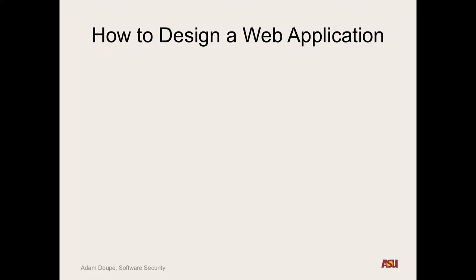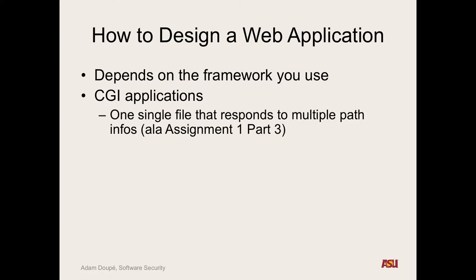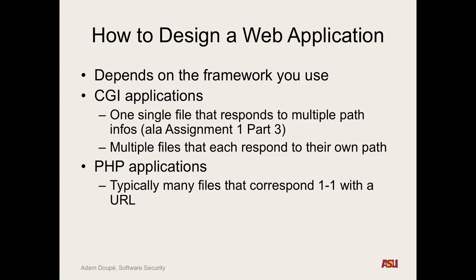We've looked at designing web code, designing a web application — we've looked briefly at PHP and JavaScript. How you actually design a web application depends on the framework and technology, and some of these can be very different. CGI applications have one single file that responds to multiple paths, whereas PHP applications are typically written with files that map one-to-one with a URL.